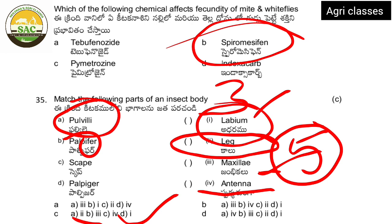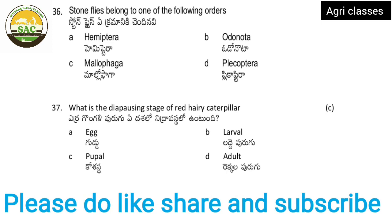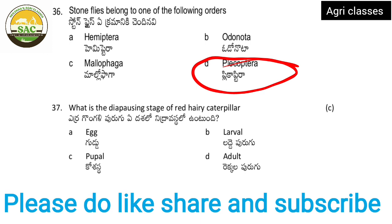Next: stone flies belong to which order? Options are Hemiptera, Odonata, Mallophaga, or Plecoptera. The correct answer is Plecoptera. Remember the insect orders — Odonata includes dragonflies, and stone flies belong to Plecoptera.